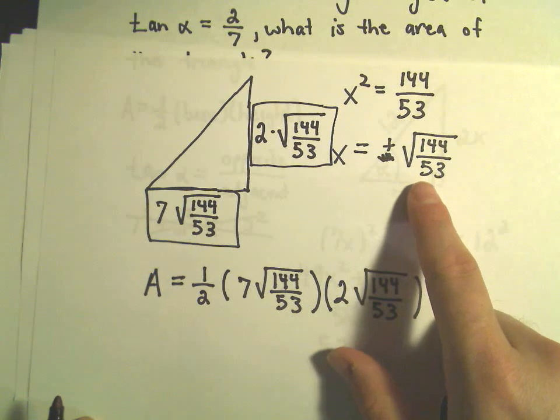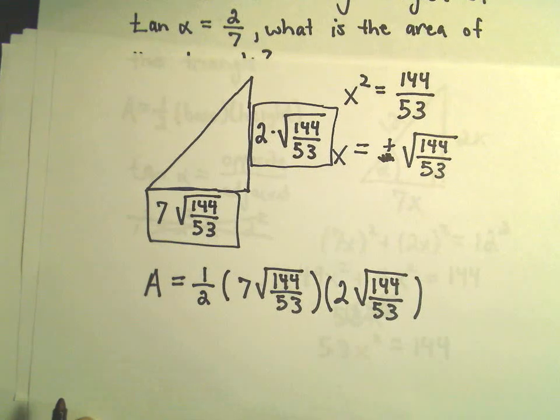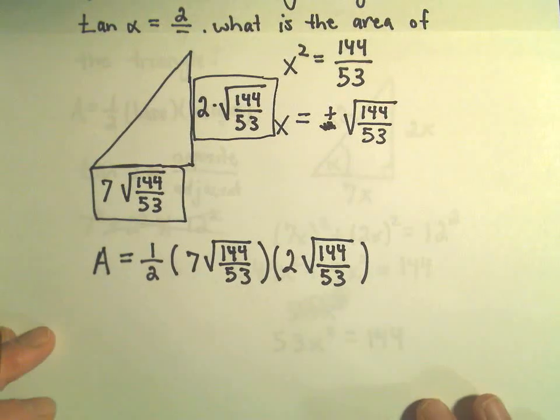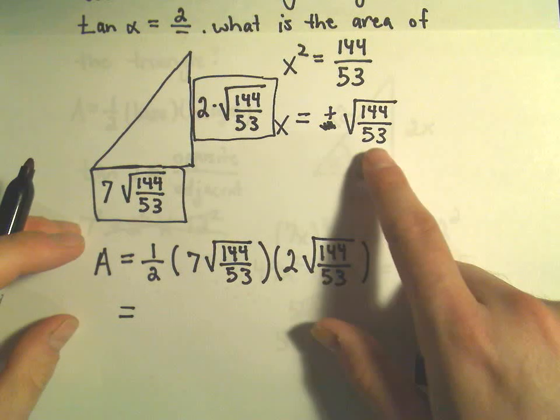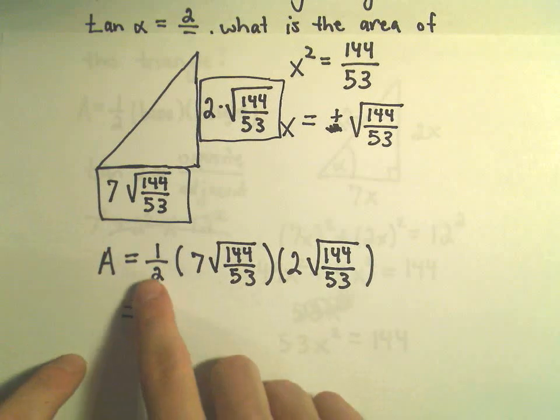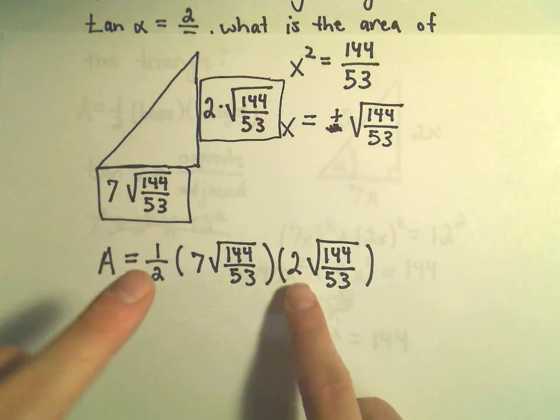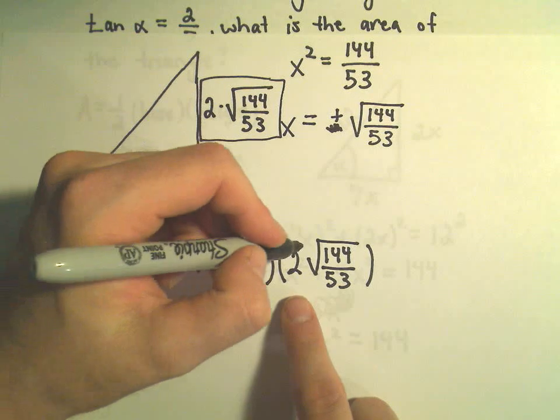And notice how I didn't even really bother. Some people will immediately, you know, start trying to simplify the radical and all that stuff. Until I really know that I need to do that, I just kind of leave it alone, because, in this case, things simplify nicely without doing that extra bit of work. So, this is all multiplication. We can multiply in any order that we want. So, 1 half times 2, that would just give us 1. So, those are basically going to just sort of go away.